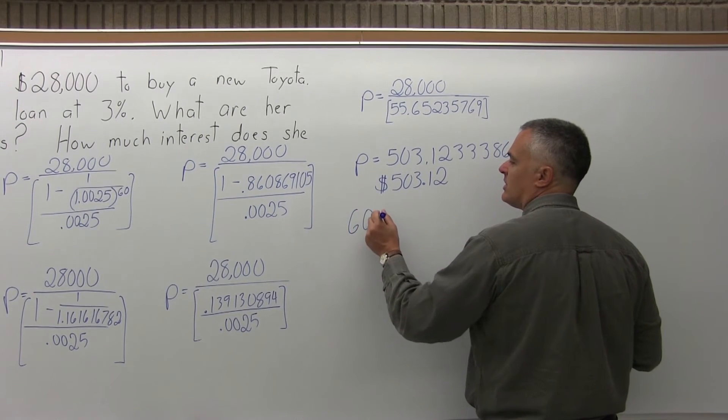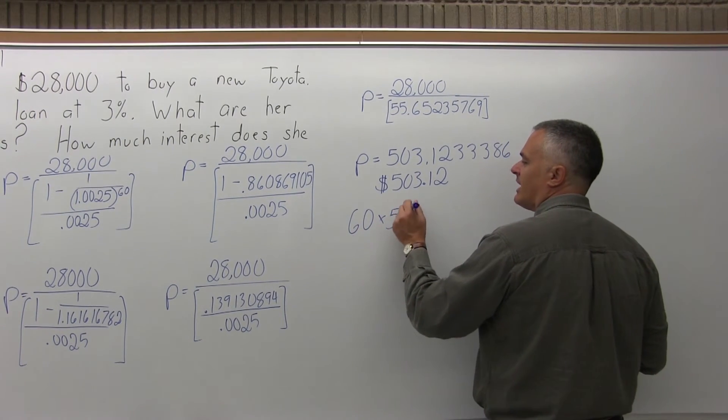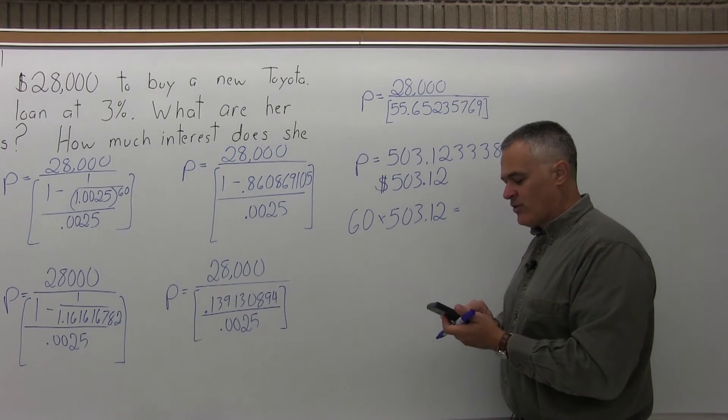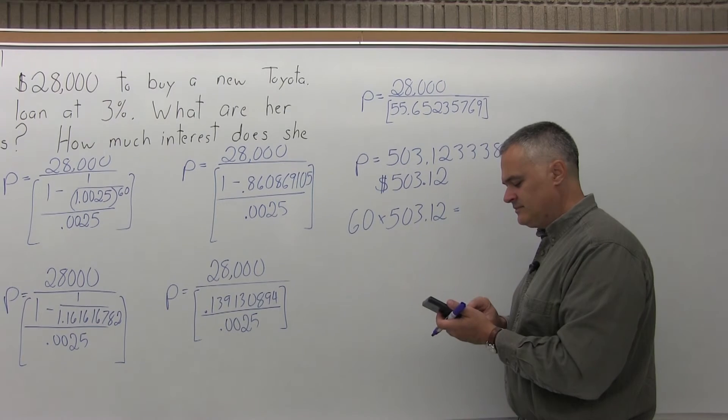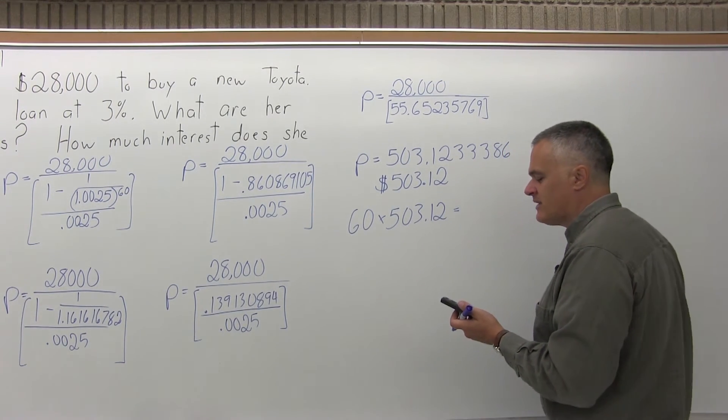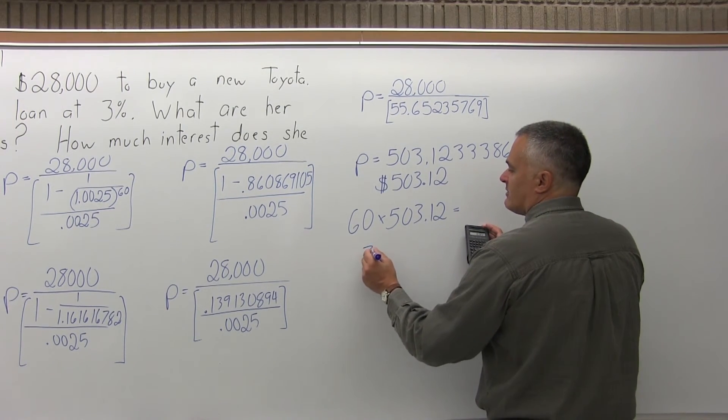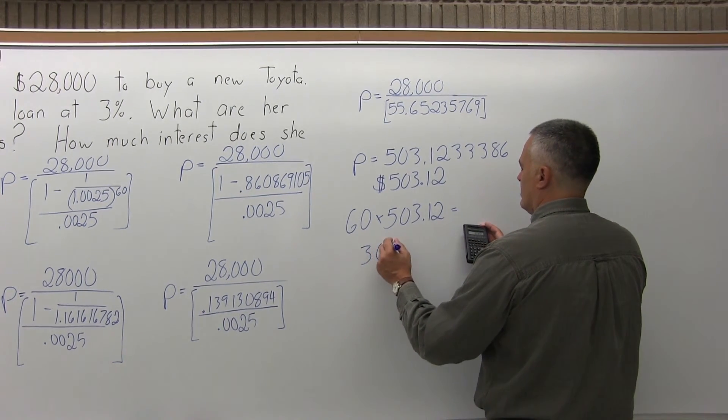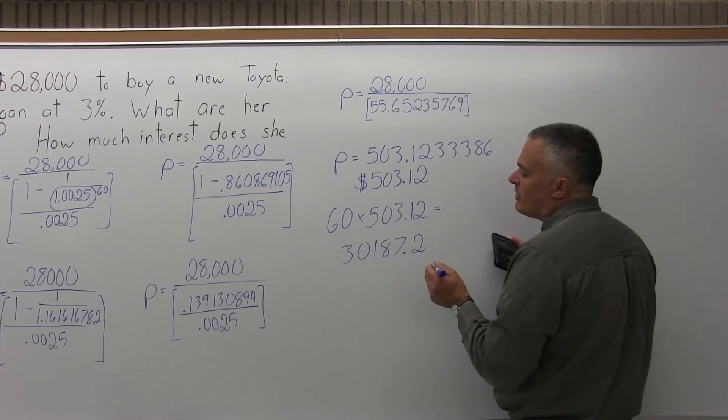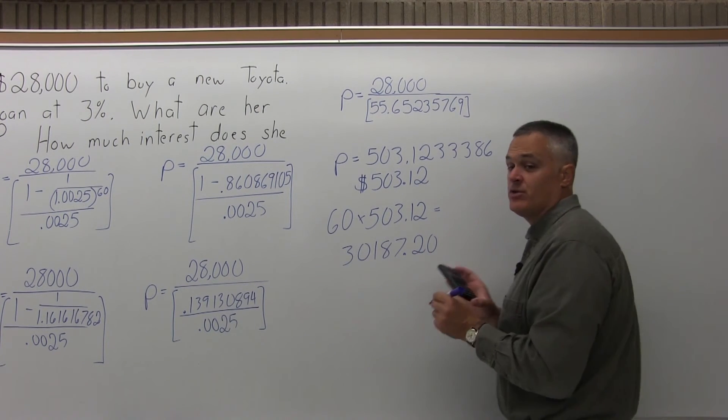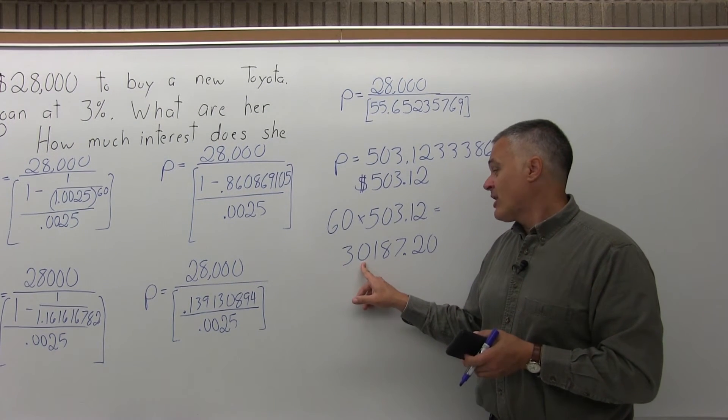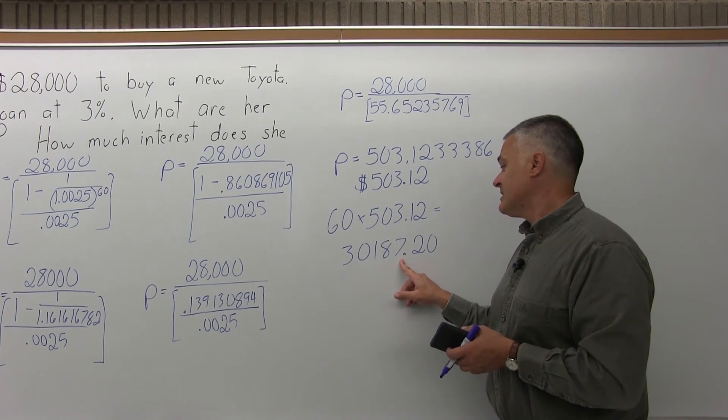So let's figure out what that comes to all together. How much does she pay the lender back over the life of the loan? So 60 times $503.12 is a little over $30,000. So that 60 times $503.12 is $30,187. The calculator says 0.2, but again, because it's money, that 0.2 I'm going to write as 0.20 is 20 cents.